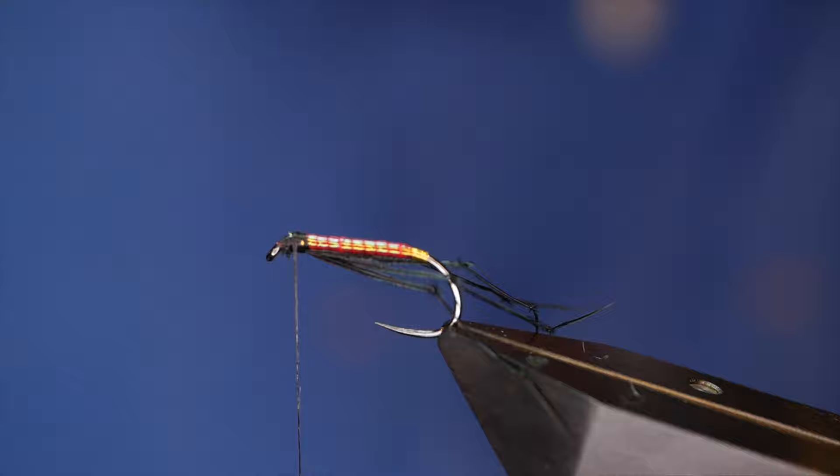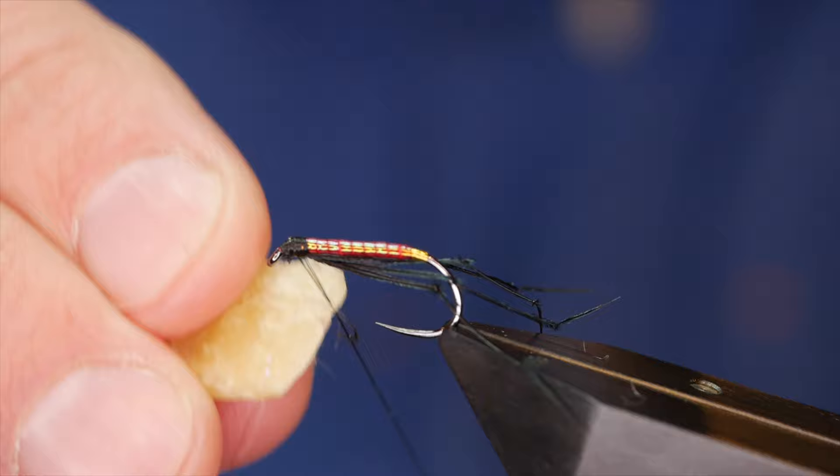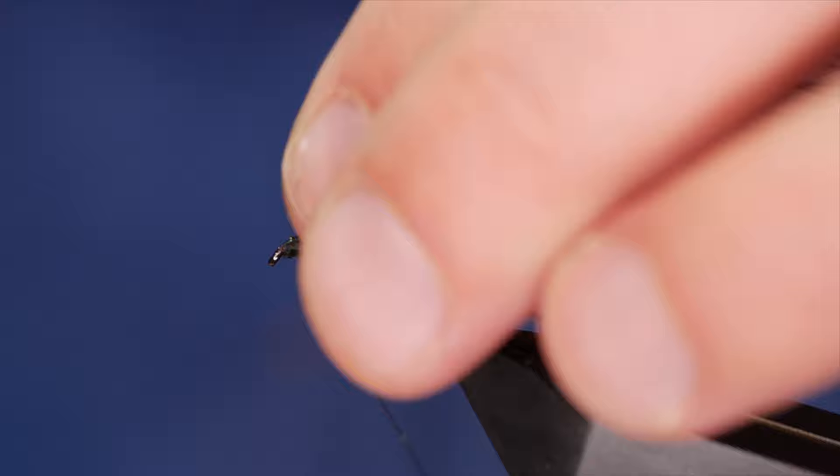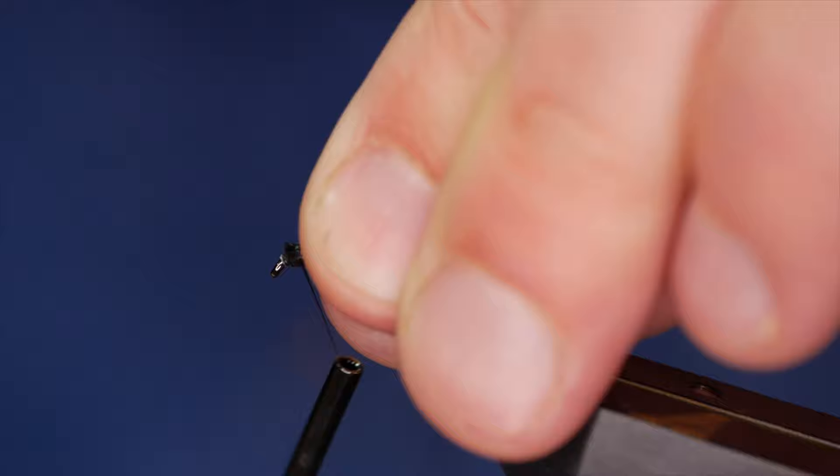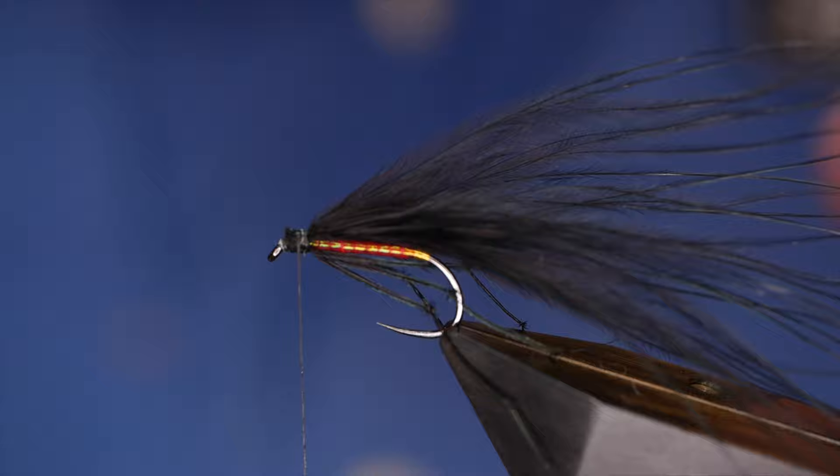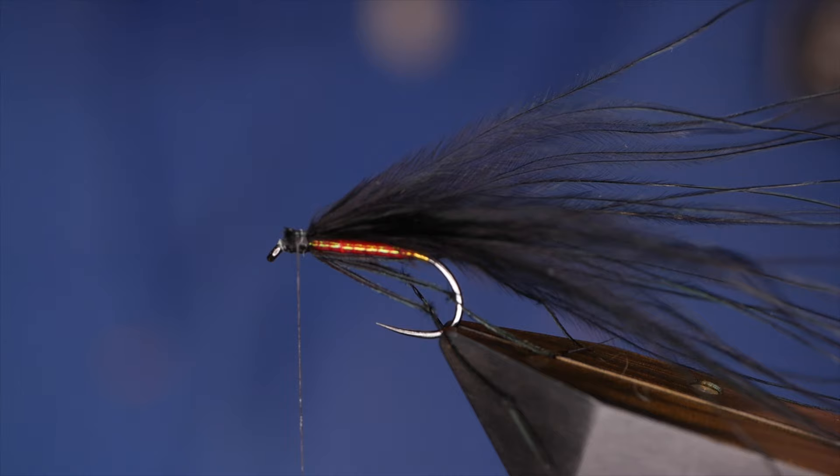Before I tie in the marabou, I'm going to add a little bit of wax to my nano silk just to help me grip the material. I only want to get two or three turns onto this. I've got a lot more turns to come and I've still got a few materials to catch in. I know that's in place. I'm going to leave the tail long as it is at the moment.